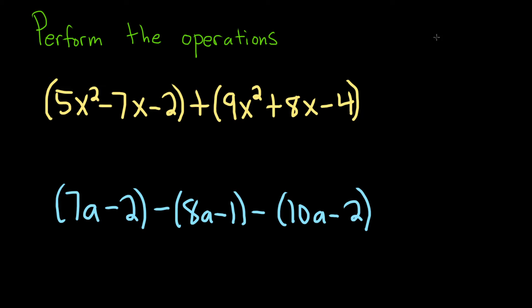In this problem, we have these polynomials and we have to perform the indicated operations. Let's go ahead and go through this very carefully. The first one basically says we have to add the polynomials. Because we're adding, we can just go ahead and drop the parentheses and add like terms.